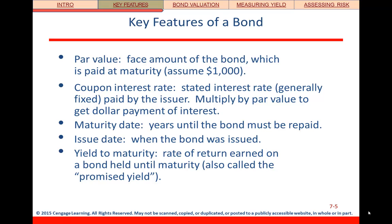Next we have the coupon interest rate. This is important because we have different interest rates related to bonds, so we need to keep them straight. The coupon interest rate, or stated interest rate, is the rate used to figure out your periodic coupon payments. This amount is typically fixed, meaning it doesn't change over the life of the bond.